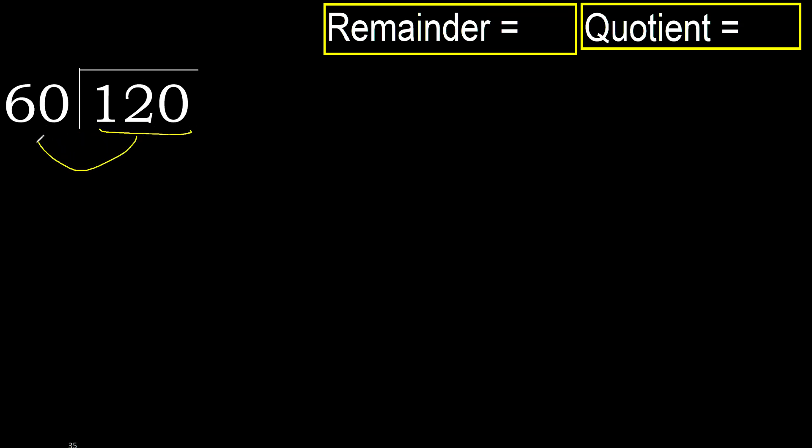120 is not less, therefore we work with 120. 60 multiplied by which number is nearest to 120, but not greater?